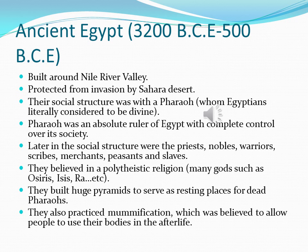Religion played a huge part in the lives of ancient Egyptians. They believed in a form of polytheistic religion, where many gods such as Osiris, Ra, and Isis were believed to exist. When you think of the word polytheistic, think of many gods, as opposed to monotheistic religions like Judaism, Christianity, and Islam, which we'll discuss later. Ancient Egyptians built huge pyramids to serve as resting places for dead pharaohs, since pharaohs were considered to be living gods. They also practiced mummification, which was believed to allow people to use their bodies in the afterlife.